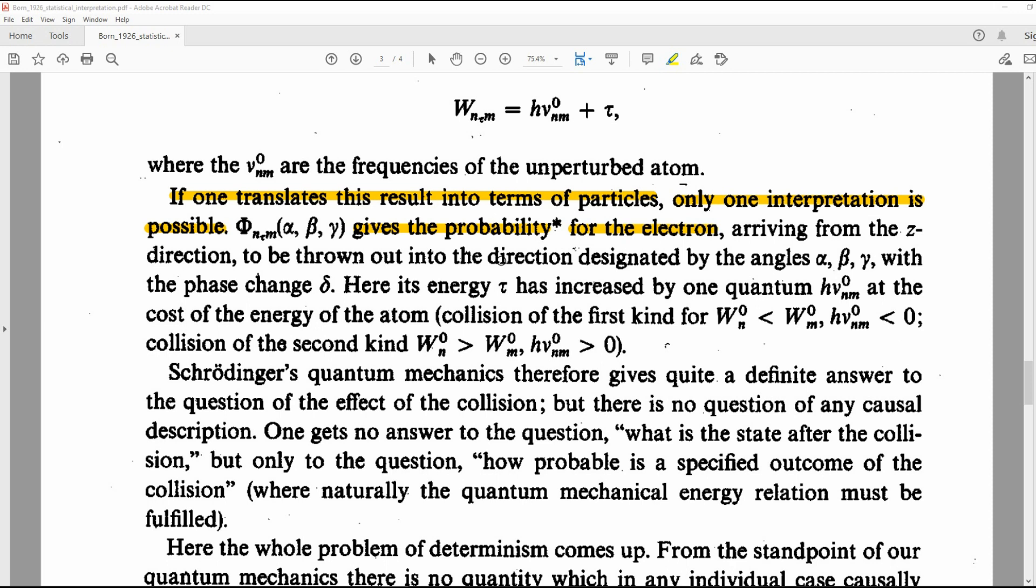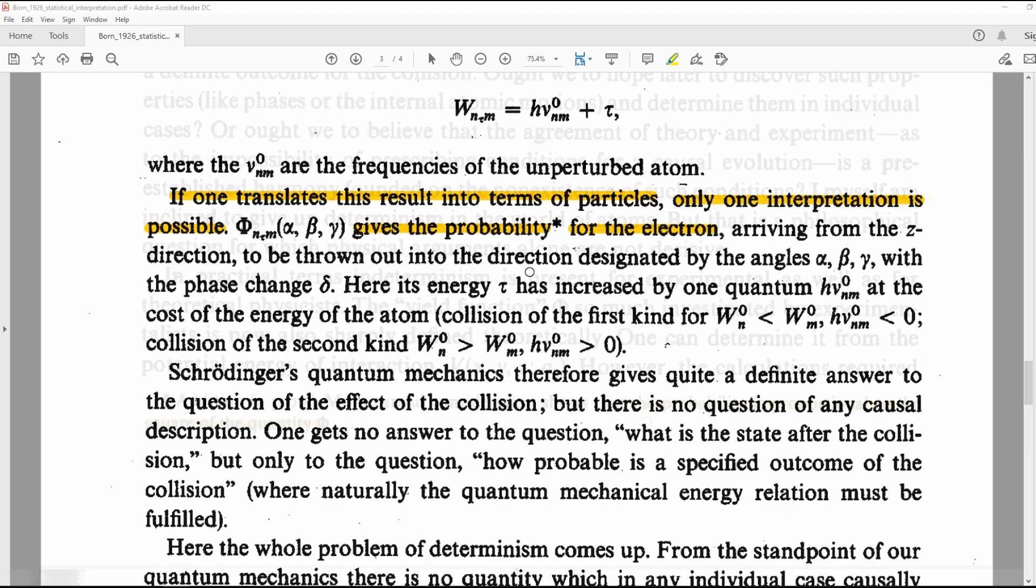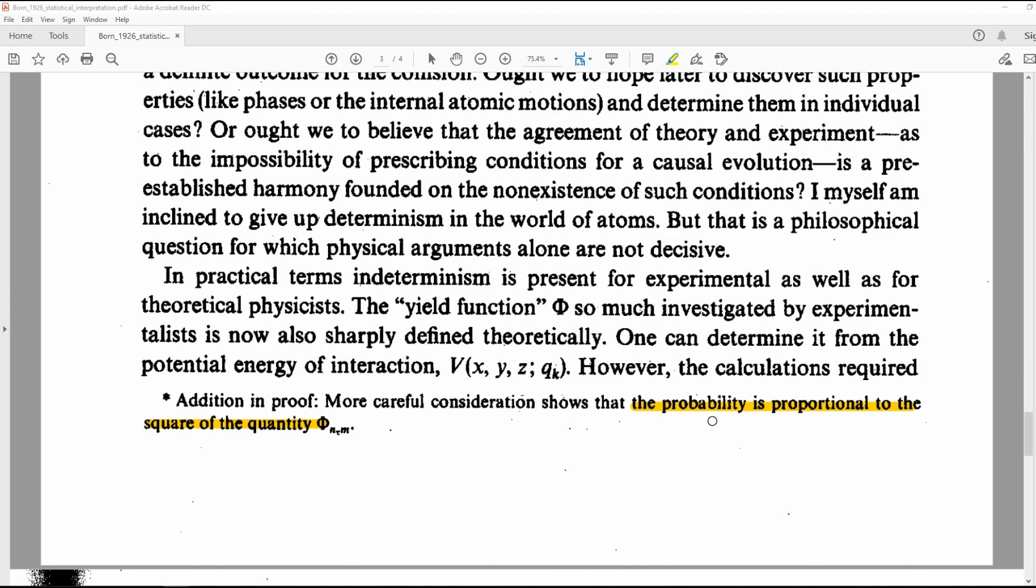So after solving the collision problem with the Schrödinger equation, Max Born states right here, If one translates this result into terms of particles, only one interpretation is possible. This is the wave function gives the probability for the electron. And this is where quantum mechanics begins. The opinion that Schrödinger's wave function gives the probability of the location for a quantum particle. This is called the Born rule. And there's no scientific proof that it's true. And just a side note, you see this asterisk. He had to correct himself and say it's the square of the wave function that provides the probability. And one last note, Max Born wants to give another opinion and let you know that he himself is inclined to give up determinism in the world of atoms. And what he's saying here is that when you choose to use probability and statistical math, that you will not be able to figure out exact locations for things in the world of atoms.